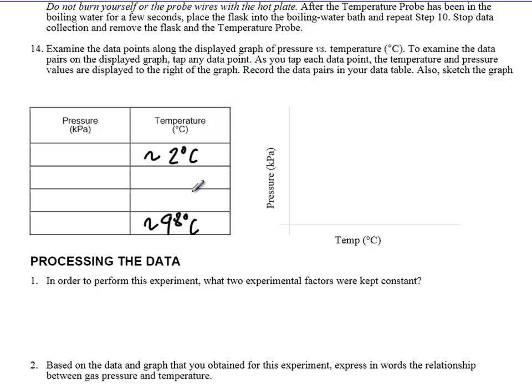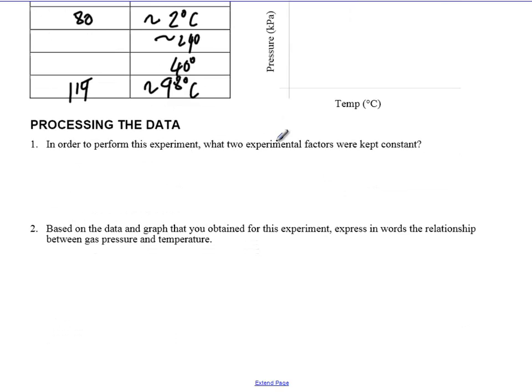0 degrees Celsius is freezing water, 100 degrees Celsius is when water starts to boil. So I'm guessing you had around 2, 24 degrees, and maybe around 40 degrees. And then your pressures probably ranged from somewhere around 80 to 114 kilopascals. Not exactly sure, somewhere in there.